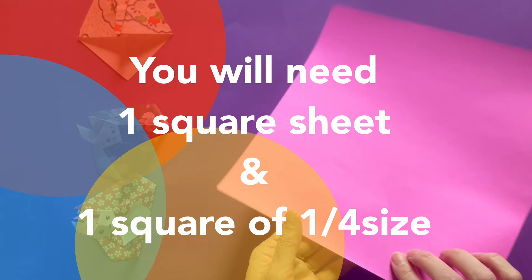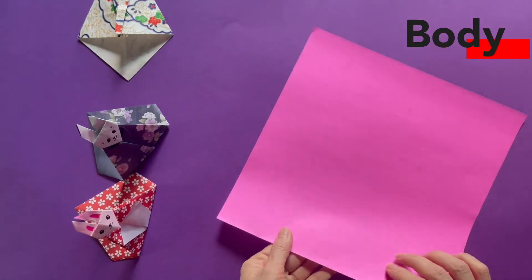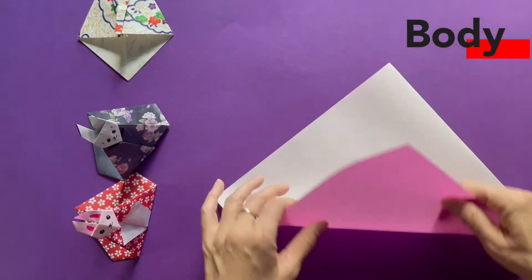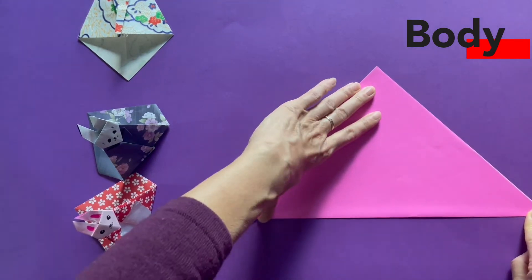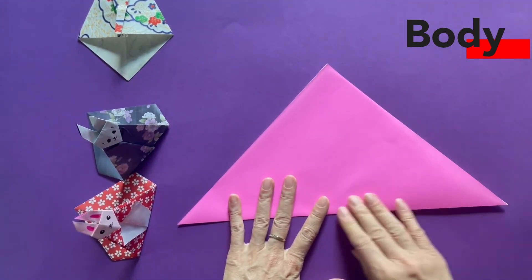We are going to fold this doll and we're starting with the body. Grab a square sheet of paper. Any size between 6 and 12 inches will do it.